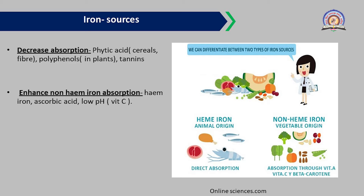Sources that enhance non-heme iron absorption include heme iron, ascorbic acid, and the low pH environment of vitamin C. In the presence of heme iron and ascorbic acid, the absorption of vegetarian-source non-heme iron is enhanced. Enhancement of non-heme iron absorption requires ascorbic acid and heme iron.